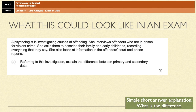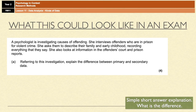Another exam question could be: referring to the investigation, explain the difference between primary and secondary data. That's a fairly standard question — you just need to explain what primary data is and what secondary data is, focusing on the difference: one is collected firsthand and one already exists. However, you also need to refer to the investigation — pick out the fact that the researcher looks at information in the offender's court and prison reports, which would be secondary data, and that she asks them to describe their family and early childhood, which would be primary data. You must link your answer to the information you're given.